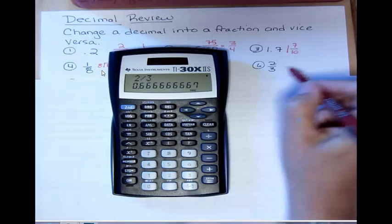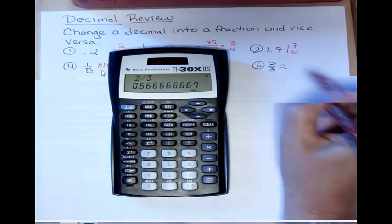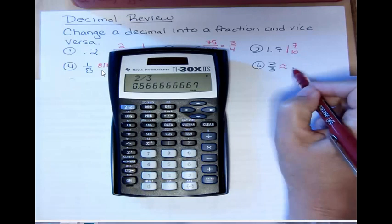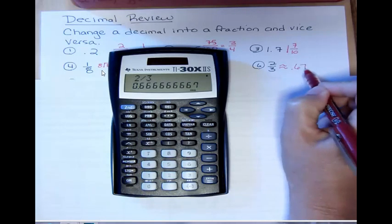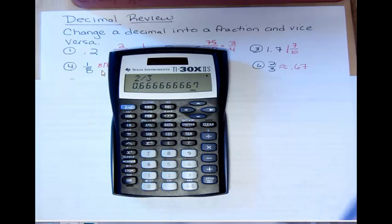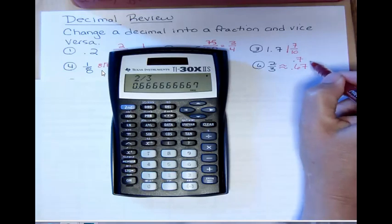So we could say that 2 thirds is approximately, those little wavy lines means approximately, let's say 0.67. That would be rounded to the nearest hundredth. If I ask you to round to the tenth, it would just be 0.7, because the 6 would always make whatever your last number is has to be going up to a 7.